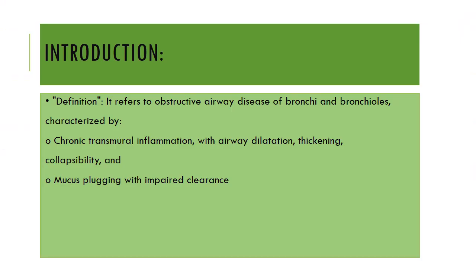Bronchiectasis refers to the obstructed airway disease of bronchi and bronchioles, and it is characterized by chronic transmural inflammation. Transmural means it involves the whole thickness of the bronchi wall, and there will be airway dilatation, thickening, collapsibility, and mucus plugging with impaired clearance.